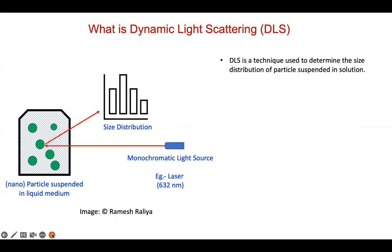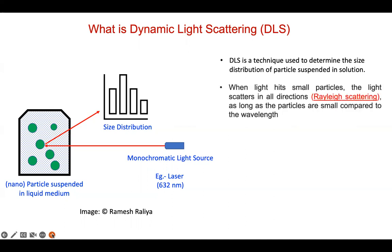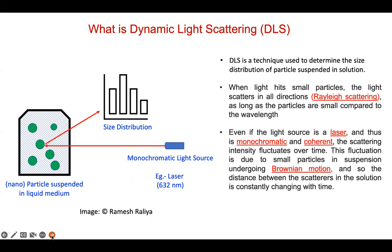In most typical DLS equipment there is a monochromatic light source in the form of a laser, typically around 632 nanometers. When the laser light hits the particles, they scatter light in all directions — that is called Rayleigh scattering. Even though the light source is monochromatic and coherent, the scattering intensity can fluctuate over time. This fluctuation is due to the particles undergoing Brownian motion, causing the distance between scatterers to constantly change.